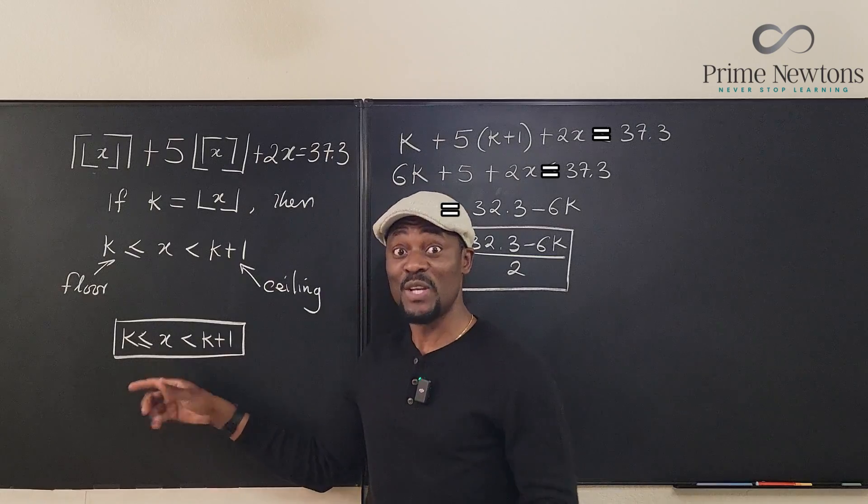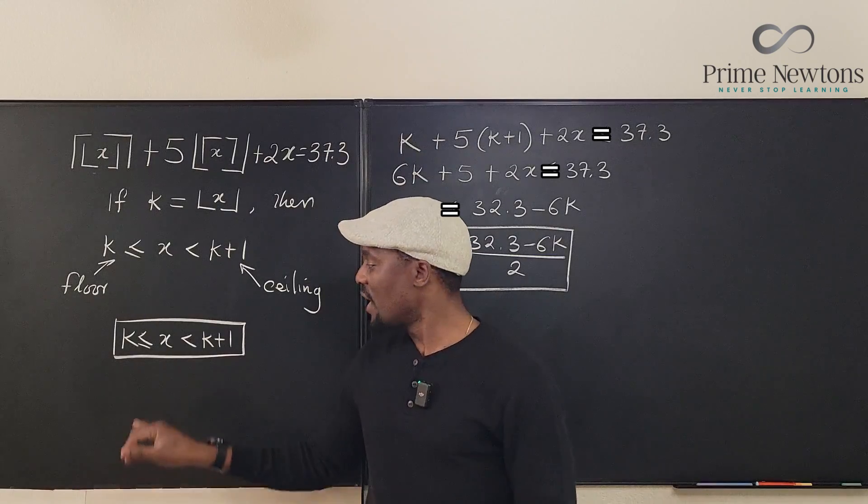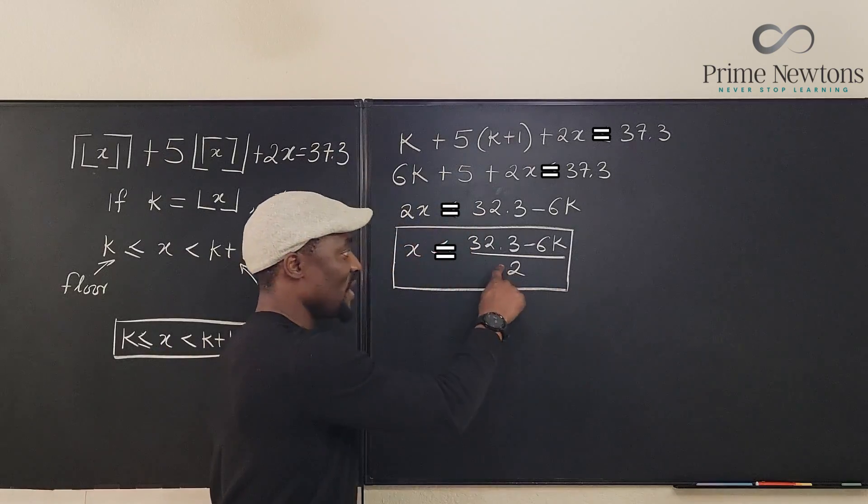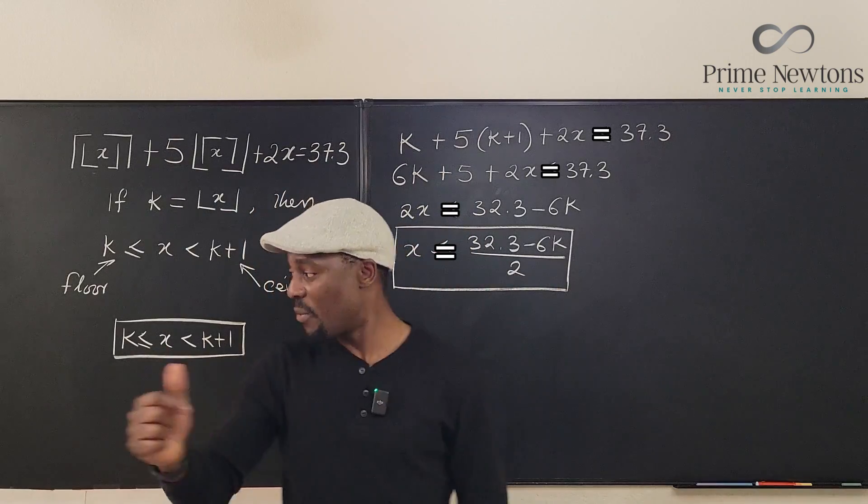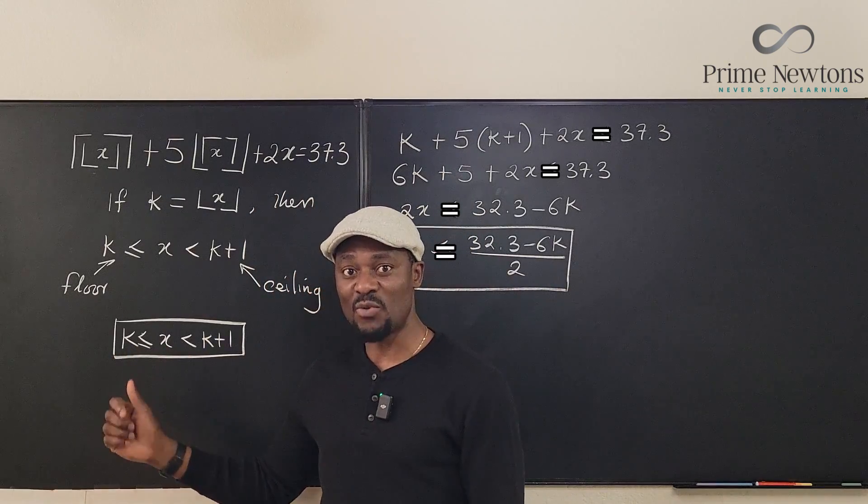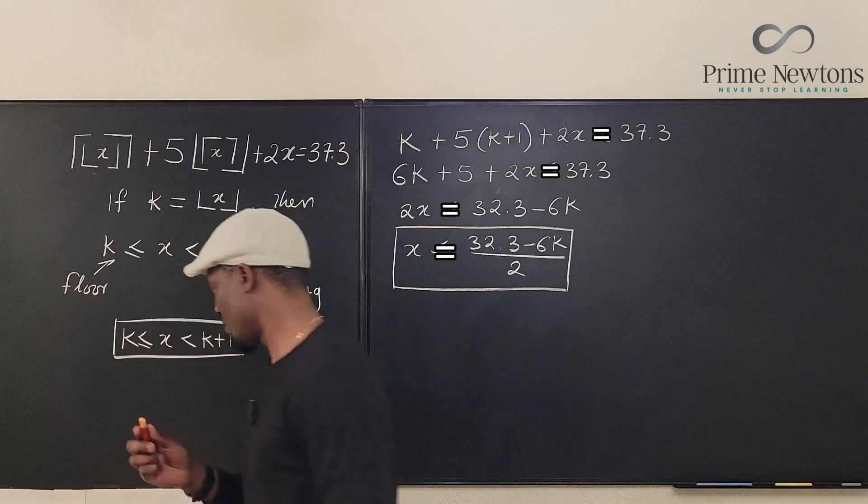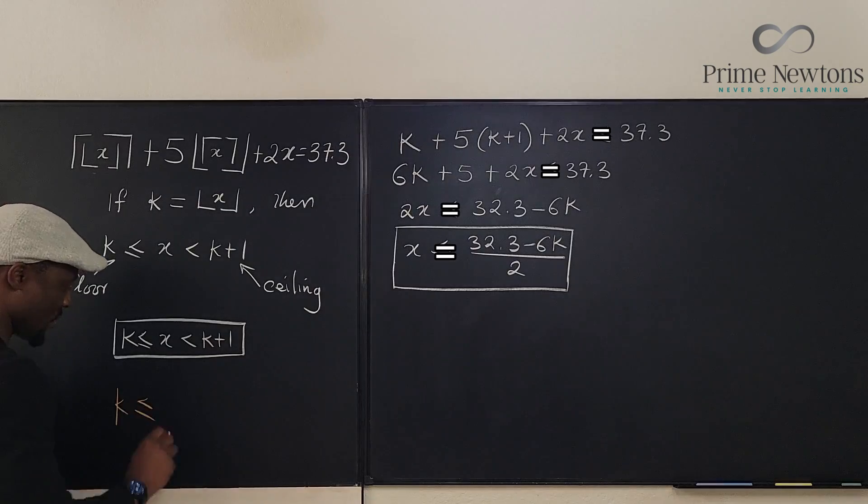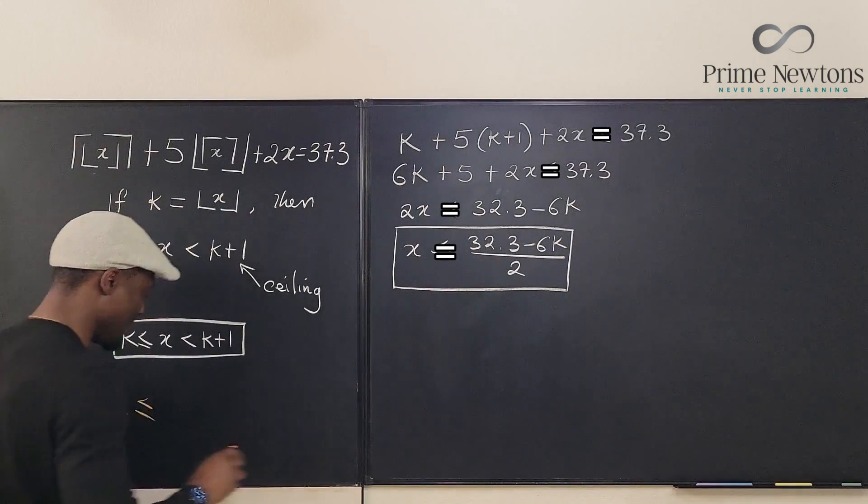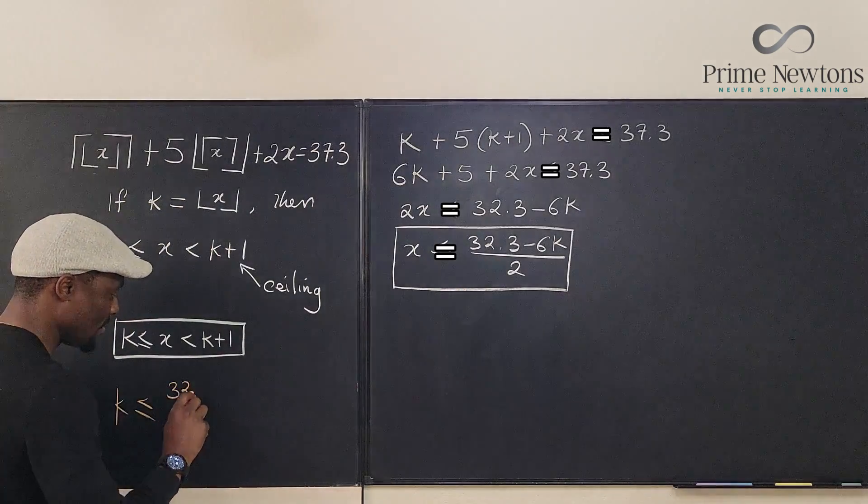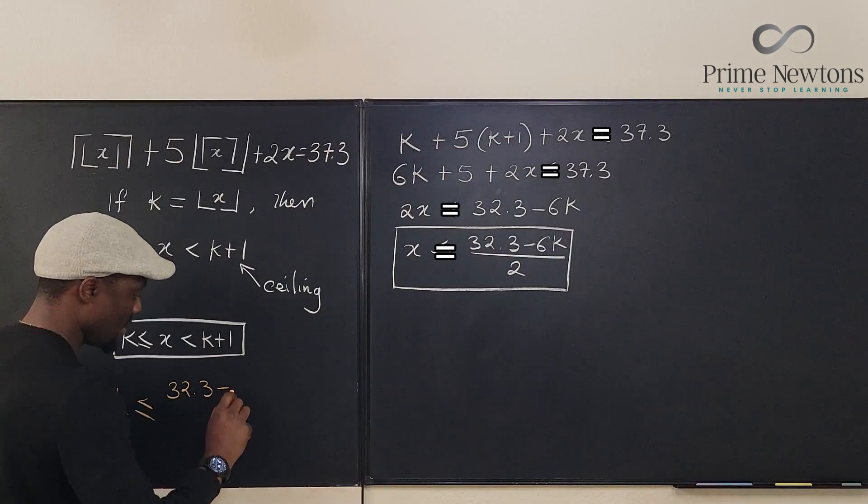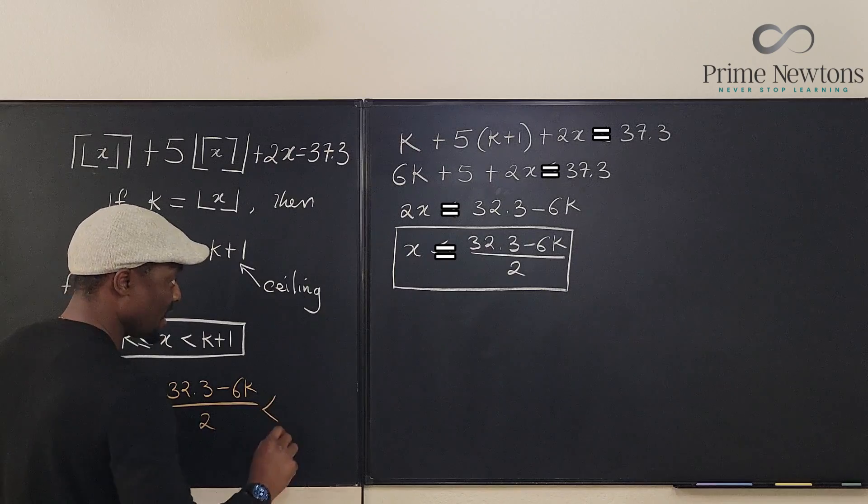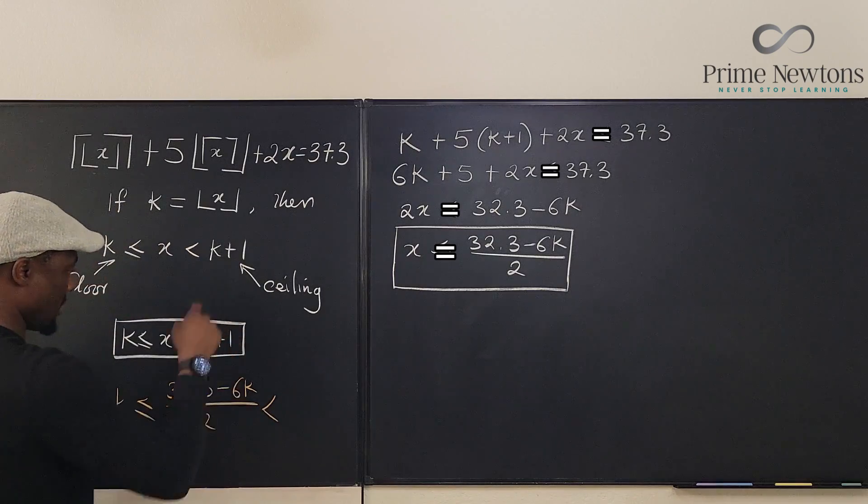Now we've gotten two essential ingredients. All we have to do now is go back to this original definition and say we know that x can be written in terms of k, which is this. So I'm going to go back to this inequality and write this afresh. Let's write it. We're going to say that k is less than or equal to, I'm not going to write x anymore, I'm going to write this: 32.3 minus 6k divided by 2, is strictly less than k plus 1.